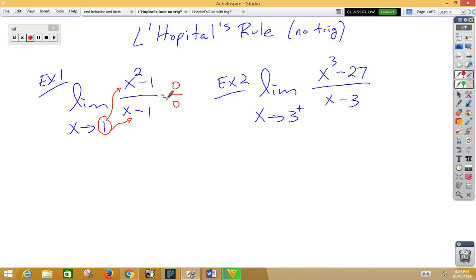So, what L'Hopital's rule tells us is that if we take the derivative of the top separately, so that would be 2x, and then we take the derivative of the bottom separately, which would be 1, we are then allowed to plug back in and get our limit, which is 2.